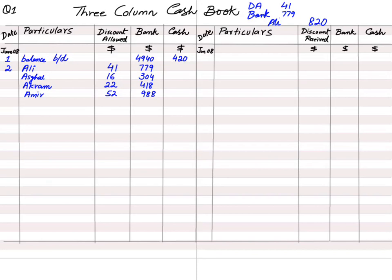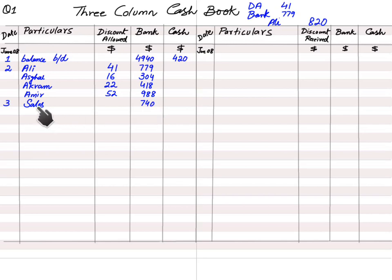On the 3rd, a cash sale was paid directly into the bank — the bank account is debited and the reference is 'Sales.' Although the money came from a cash sale, it was deposited directly into the bank. Then rent was paid by cash — cash is credited and the reference is 'Rent.' The journal entry: debit rent, credit cash.